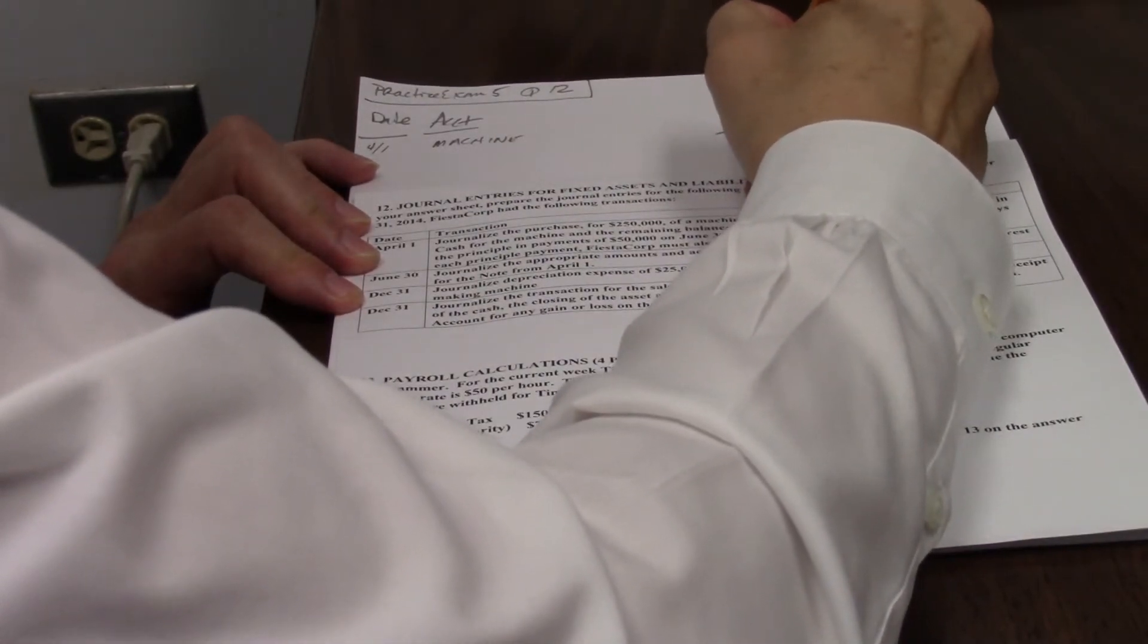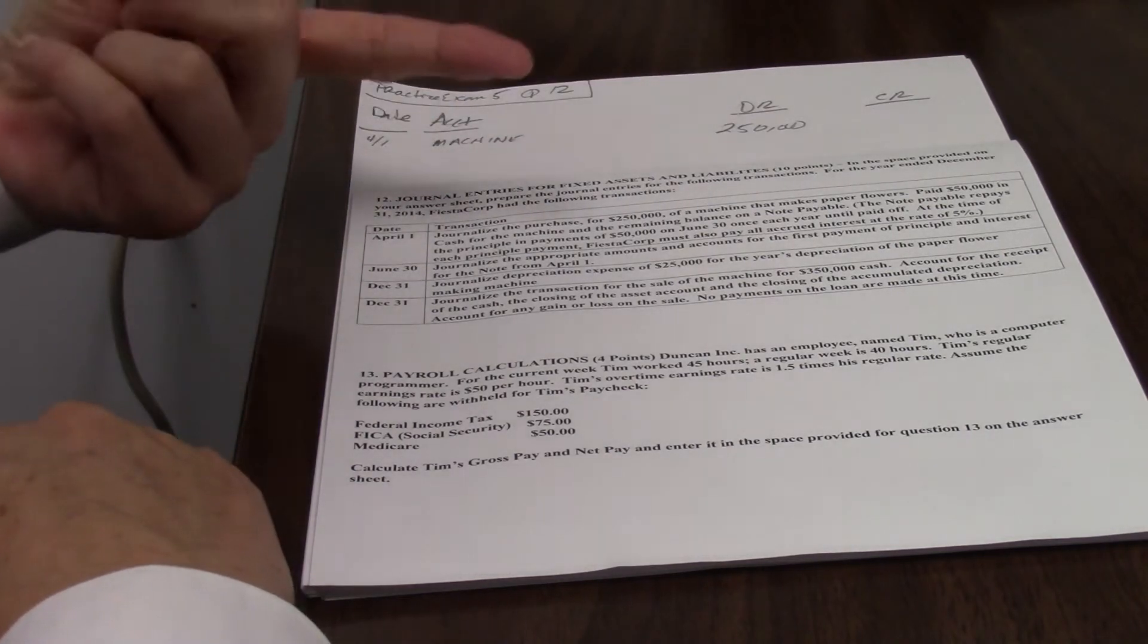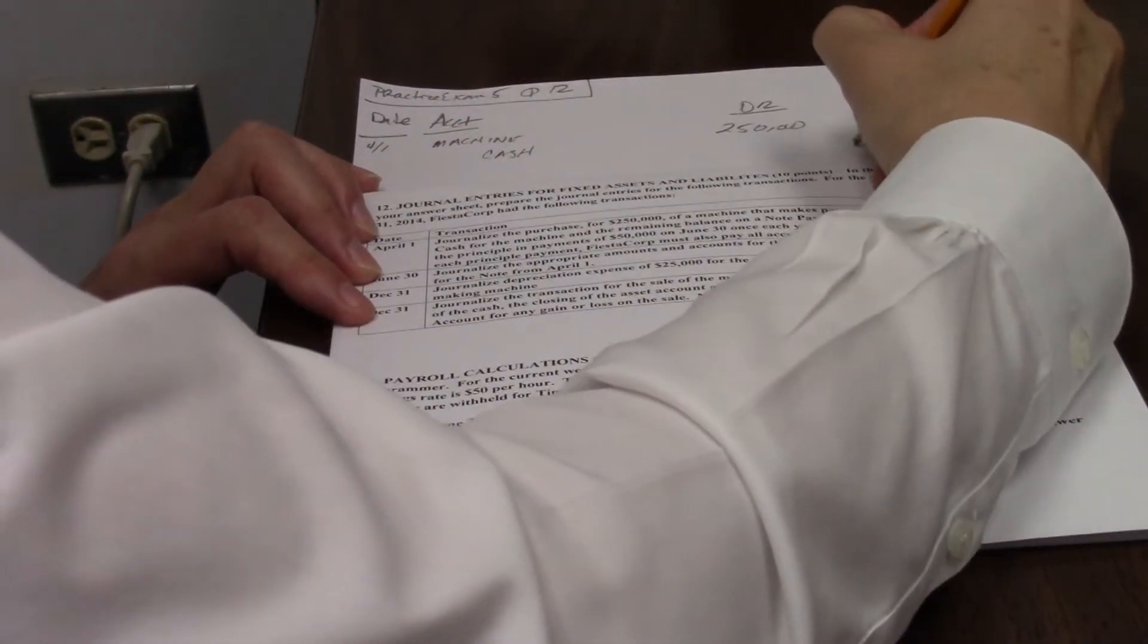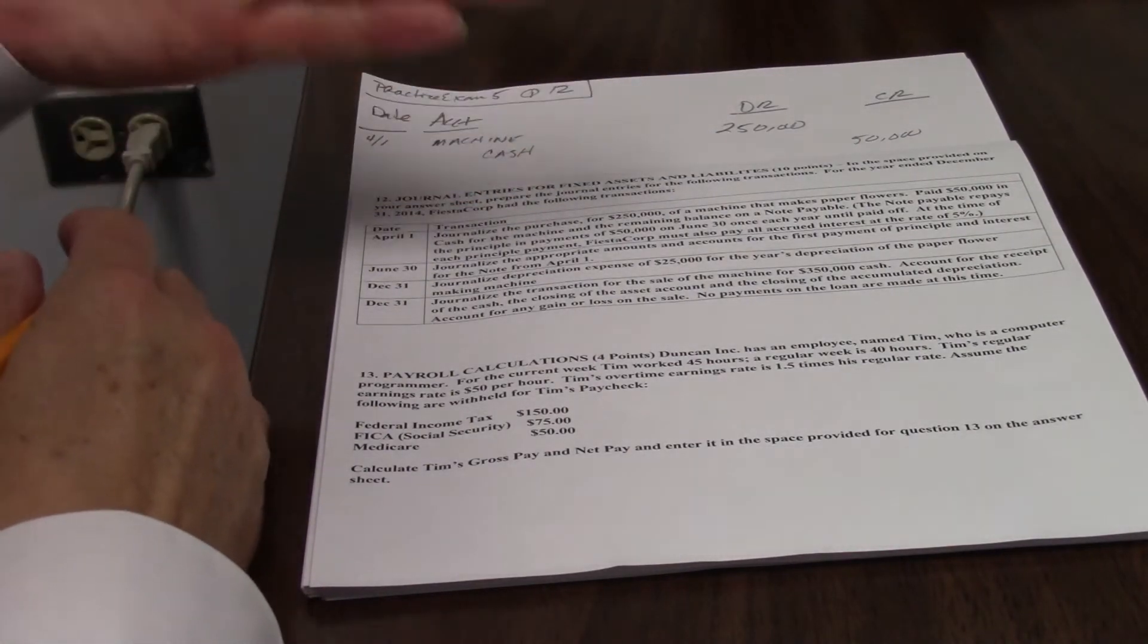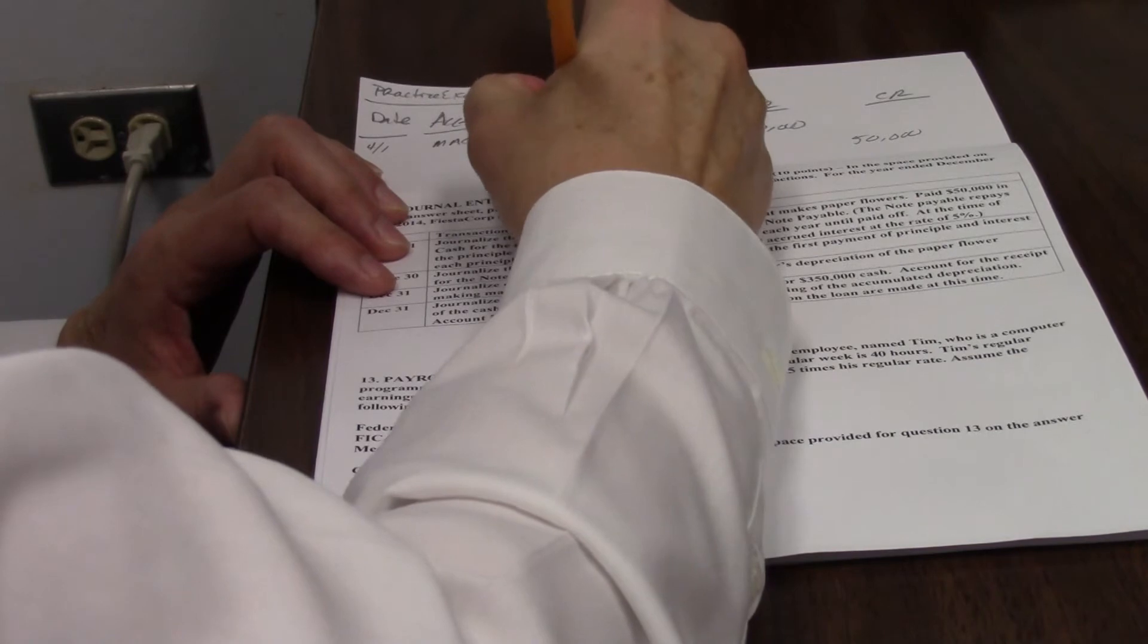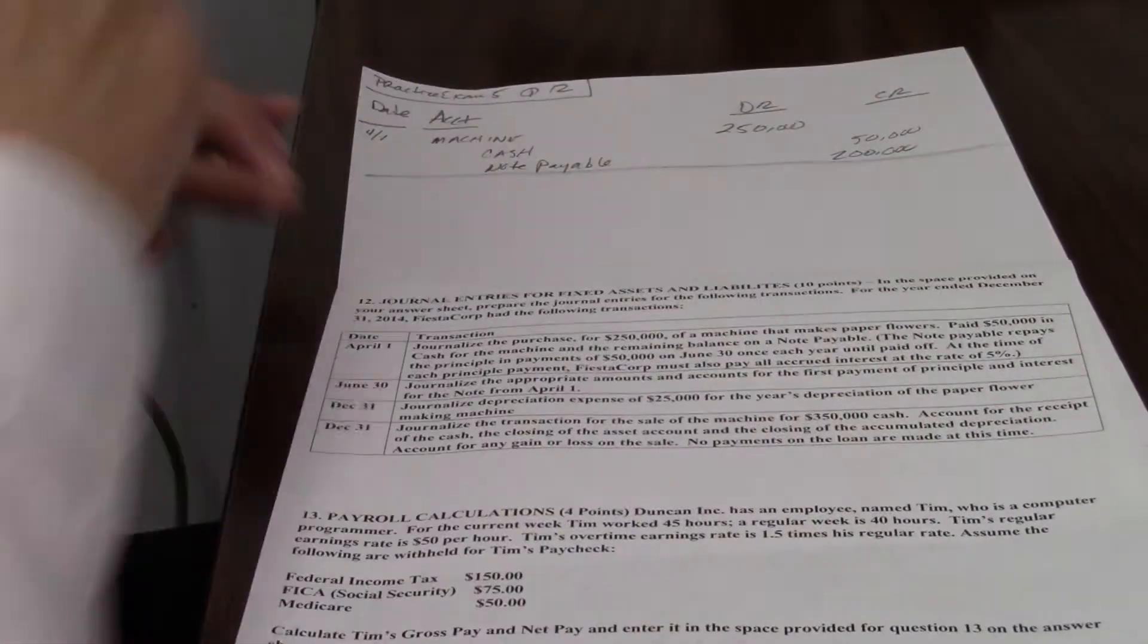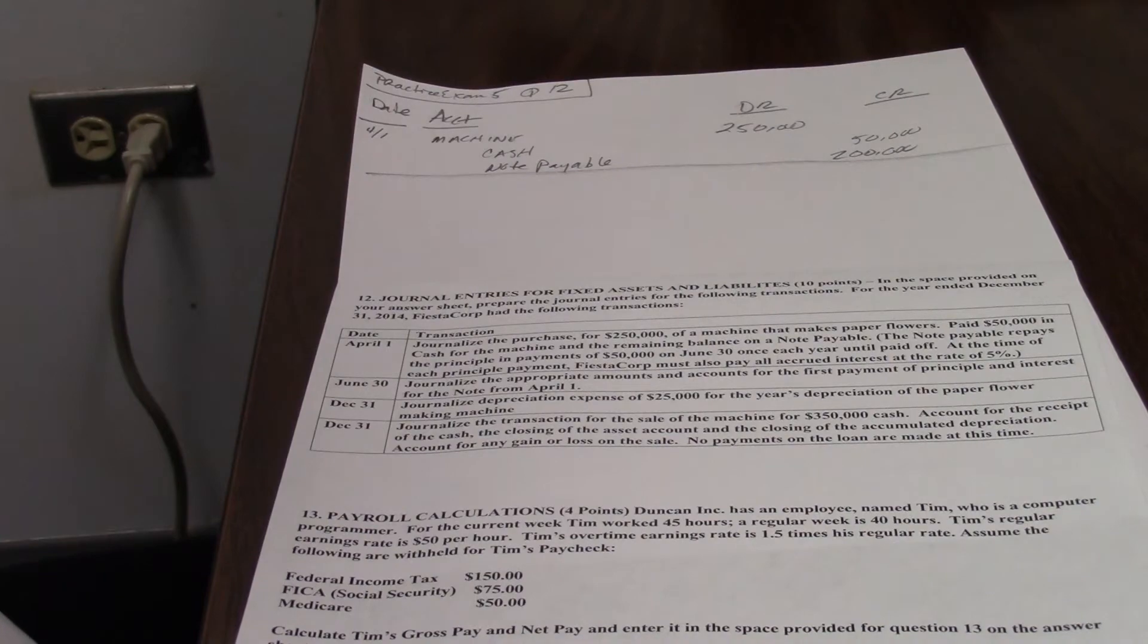The credits, we need $250,000 worth of credits. We know we're paying out cash. Cash leaving, cash is an asset, cash going out, that's a credit. So cash $50,000. And a note. Note's a liability. Liabilities always increase with credits. So the note payable is $200,000. There's our first transaction, all journalized. Machine $250,000, cash and note payable $250,000. Debits equal credits, we're done.